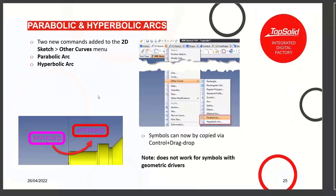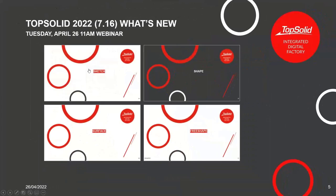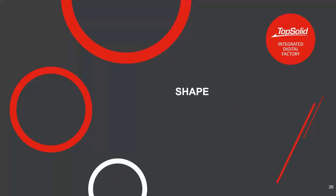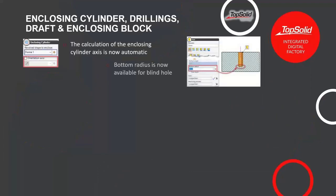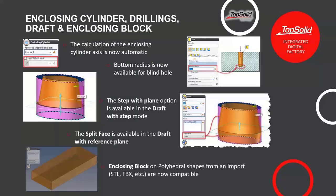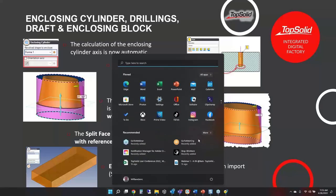That covers the major things for the sketcher. Let's take a look at shape next. The first thing is an improvement to the calculation of the enclosing cylinder — the axis is now calculated fully automatically. Let's go have a look.